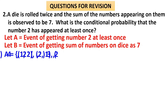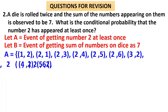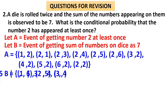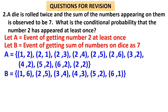Event A — getting the number 2 at least once — means once or twice. The outcomes where 2 appears include: (1,2), (2,1), (2,3), (2,4), (2,5), (2,6), (3,2), (4,2), (5,2), (6,2), and (2,2) where it appears twice. Event B — sum equals seven — includes: (1,6), (2,5), (3,4), (4,3), (5,2), (6,1).